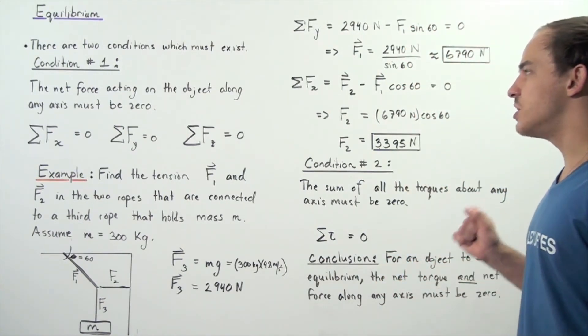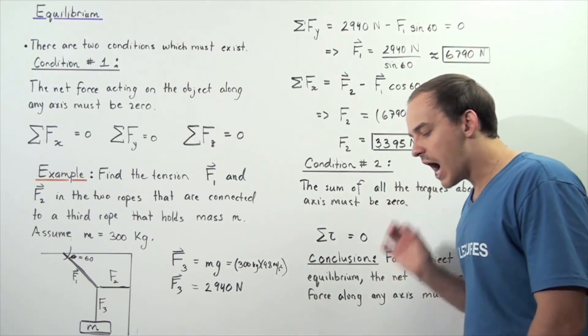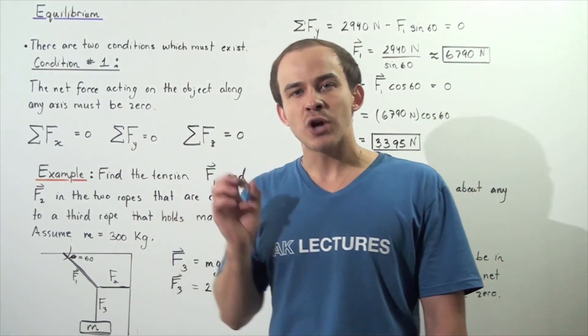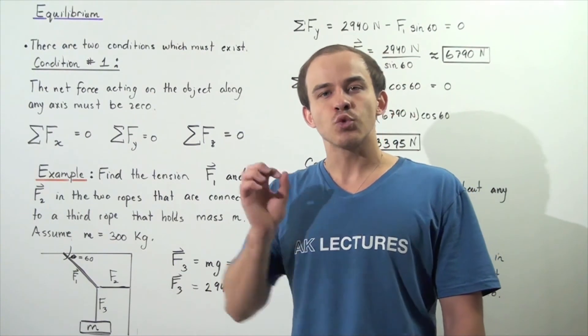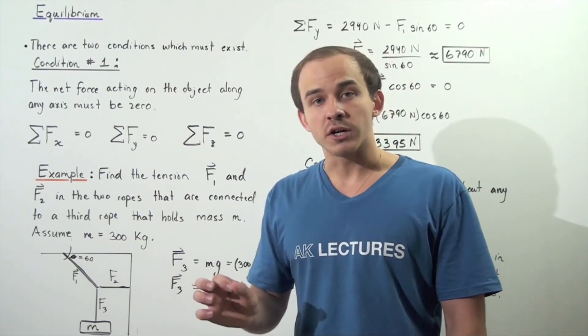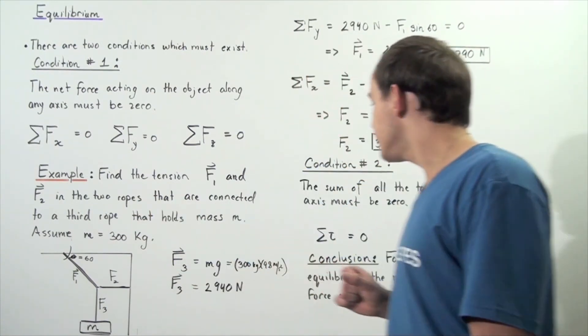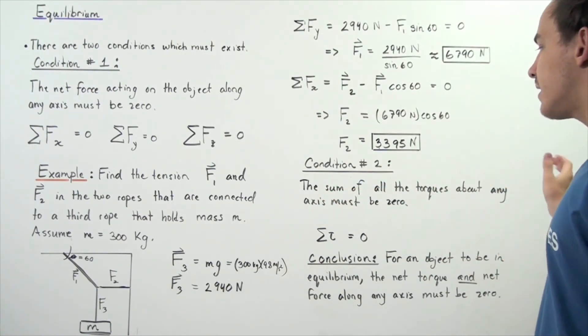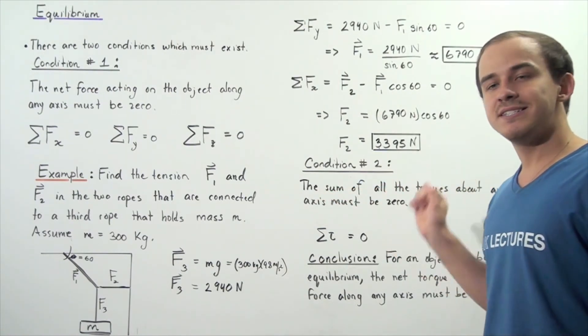Now, what about condition number two? In order for an object to be in static equilibrium, the object cannot translate and it cannot rotate. And since torque creates rotation, that means the sum of all the torques acting on the object about any axis must be zero.